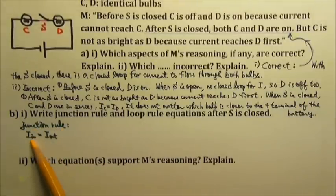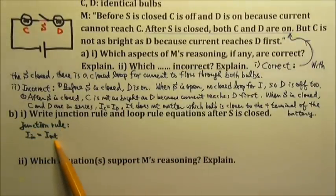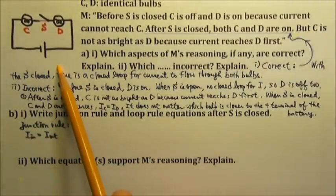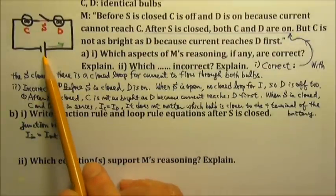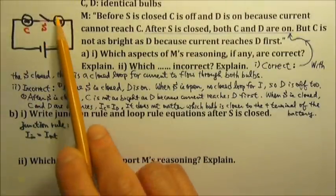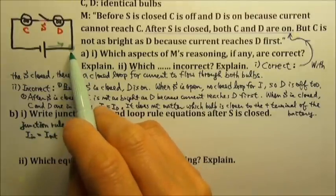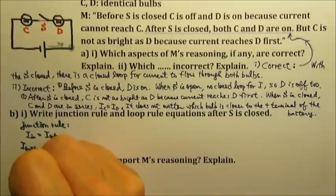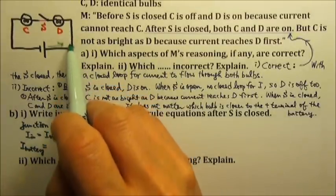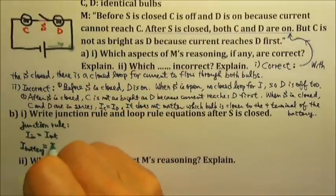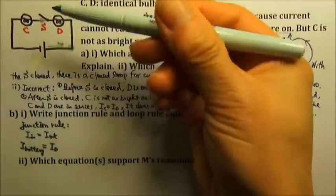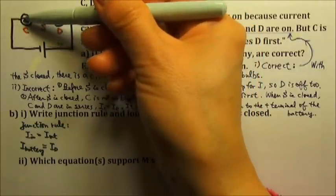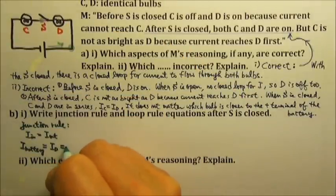The junction rule says at any junction point, the current going in equals the current coming out. There is no real junction point in this circuit, but we can look at any point. The battery pumps current out of its positive terminal going counter-clockwise. The current going in at one point is from the battery; the current coming out goes through bulb D. At the next point, current in is through bulb D and current out is through bulb C. So Id equals Ic.